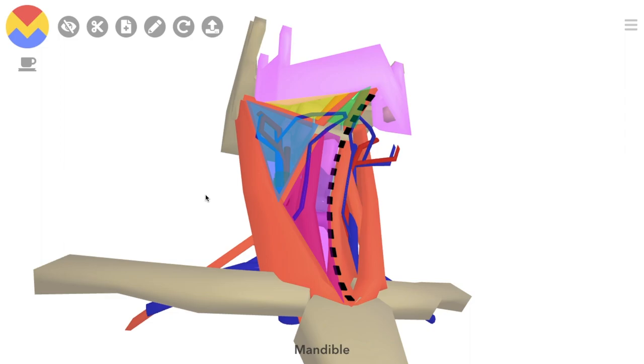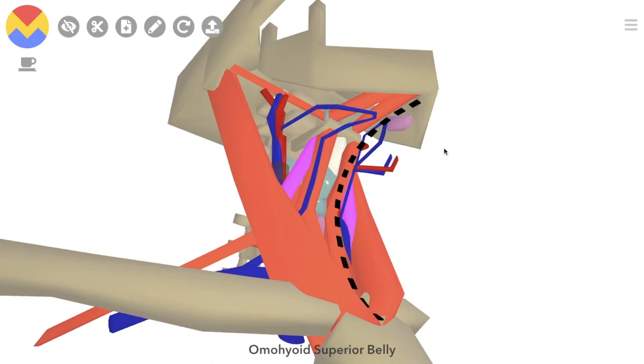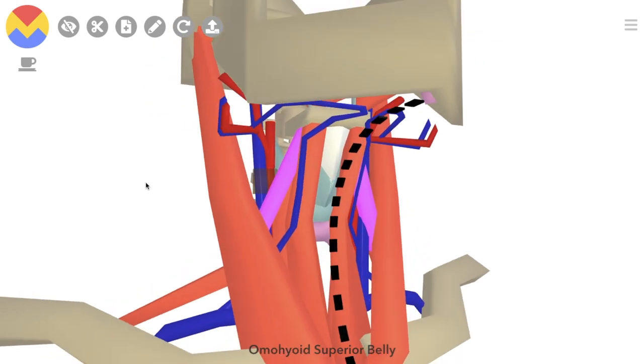The first we'll discuss is the carotid triangle. Its borders are the posterior belly of the digastric muscle, sternocleidomastoid, finished off by the superior belly of the omohyoid. It contains, as the name suggests, the common, external, and internal carotid arteries, as well as the internal jugular vein and its tributaries.